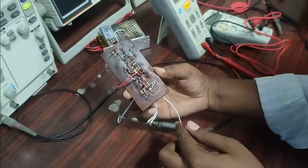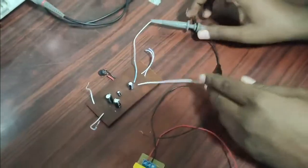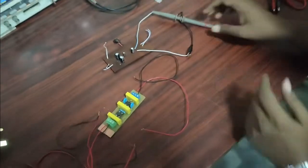This is our switch mode buck converter. This converter converts 220 volt AC to 5 volt DC.